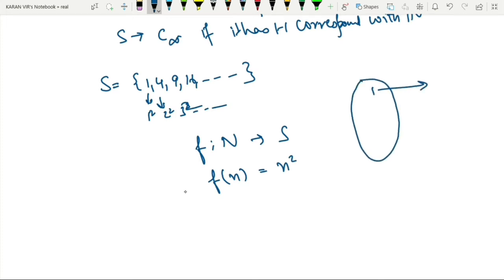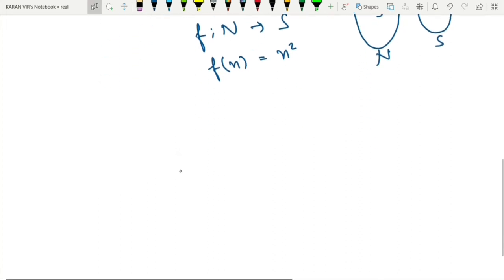One gets mapped to 1 squared, that is 1. Similarly, 2 will get mapped to 4, 3 will get mapped to 9. One-to-one correspondence. So the cardinality of naturals must be equal to the cardinality of the set S, and the cardinality of the naturals is given by aleph naught. So the set S is countable.